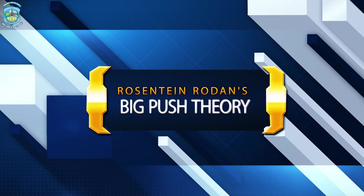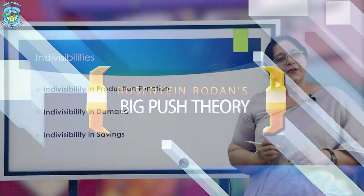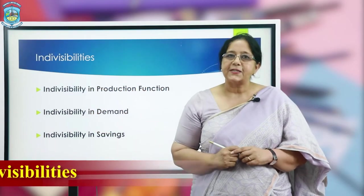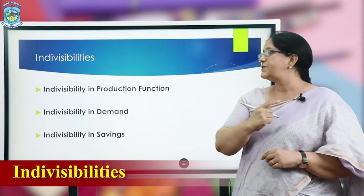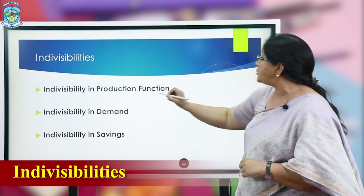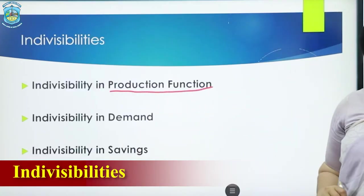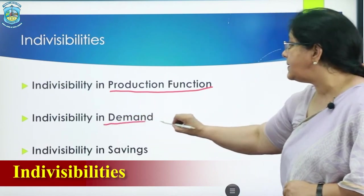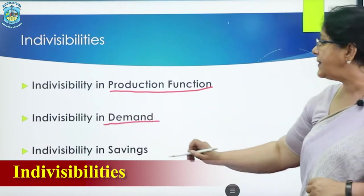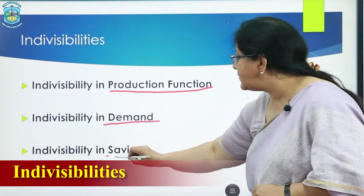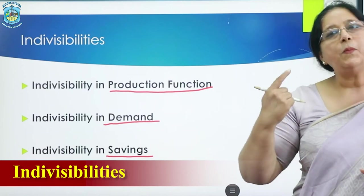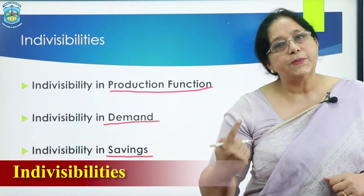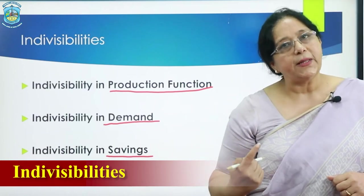Rosenstein-Rodan has explained his theory of big push with the help of three kinds of indivisibilities. The first is indivisibility of production function, the second is indivisibility in demand, and the third is indivisibility in savings. One by one, I'll explain what these indivisibilities actually mean.